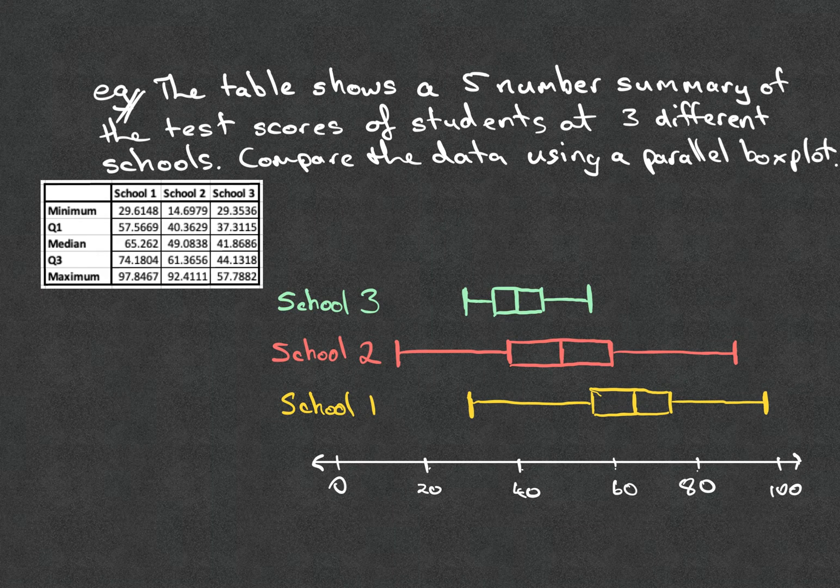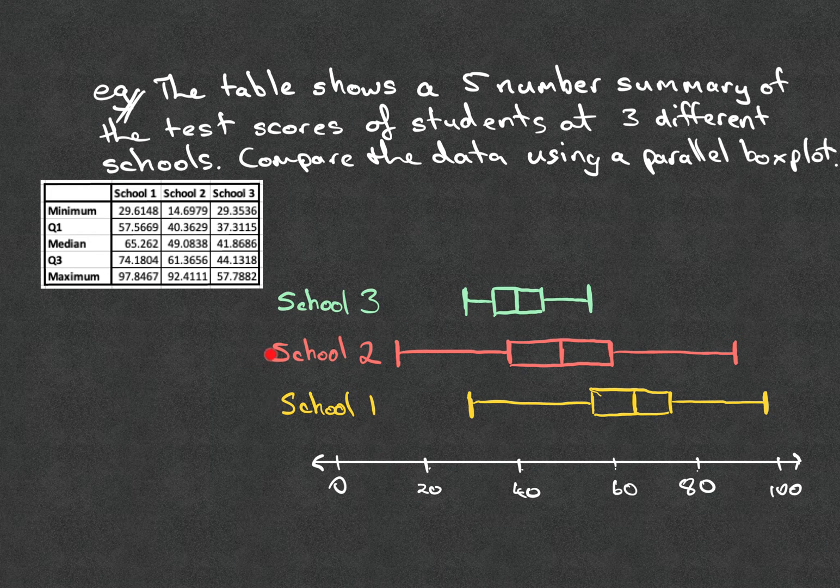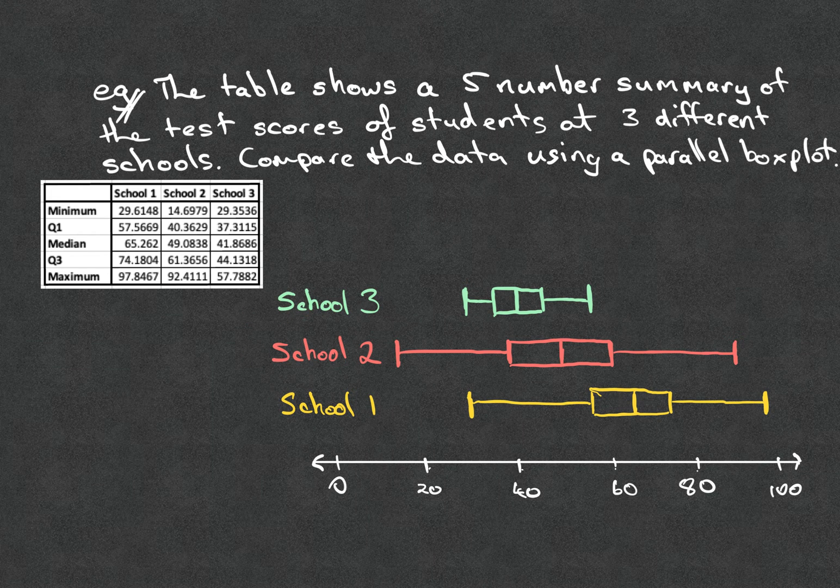So you can see I've now popped in the other two box plots, stacked all one on top of each other. School 1 in yellow right here, School 2 in red, and School 3 in that green sort of color.